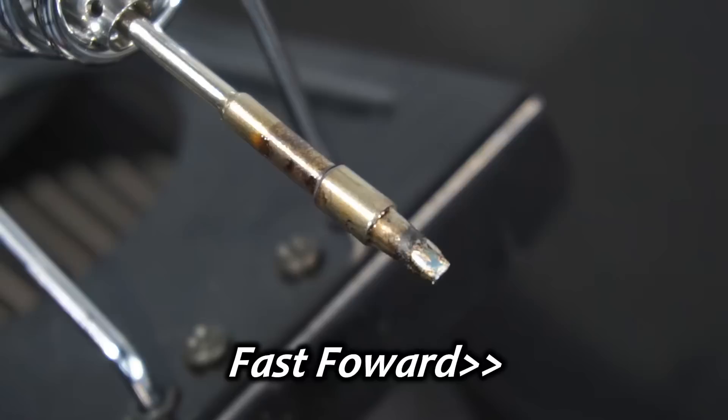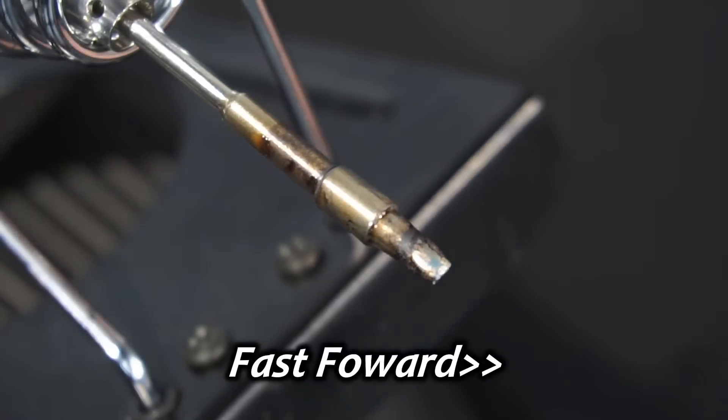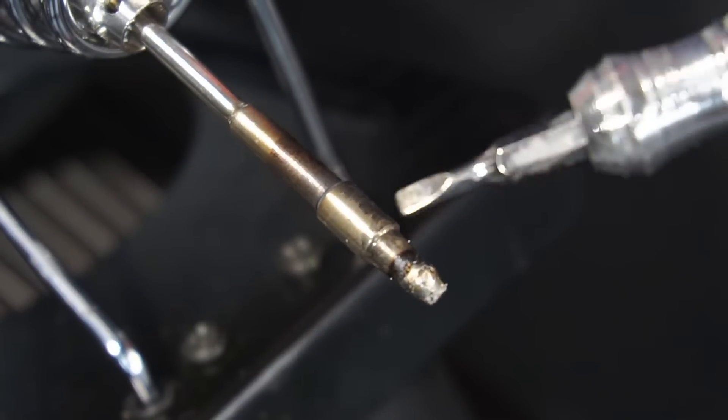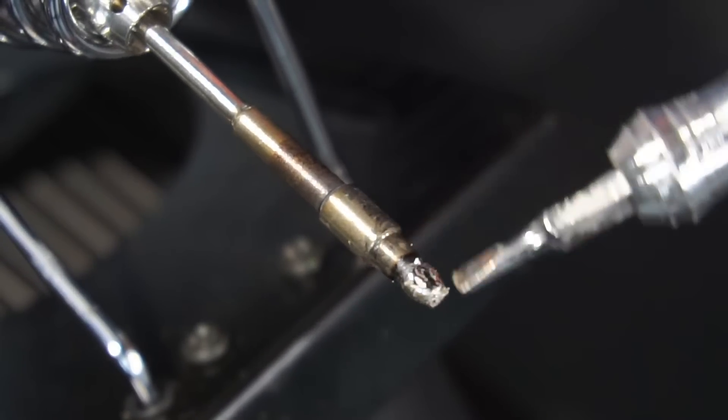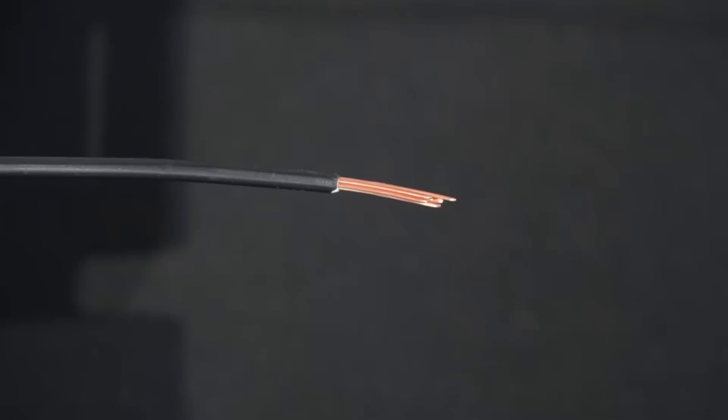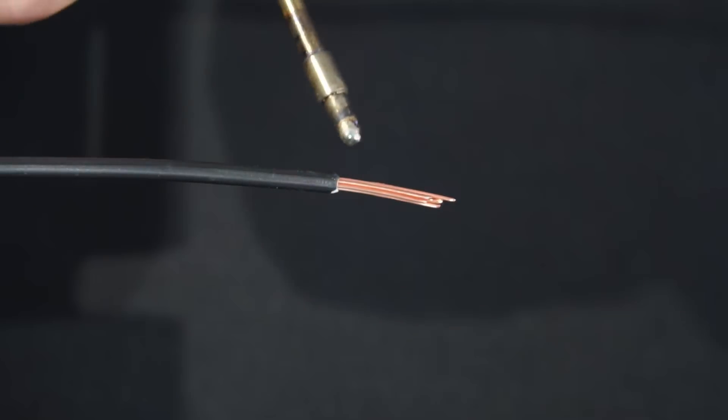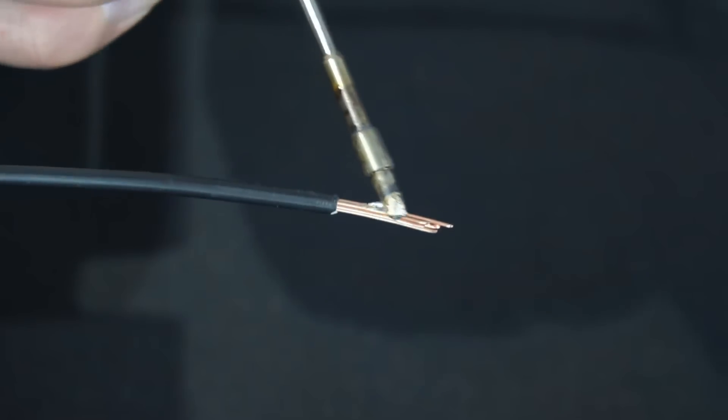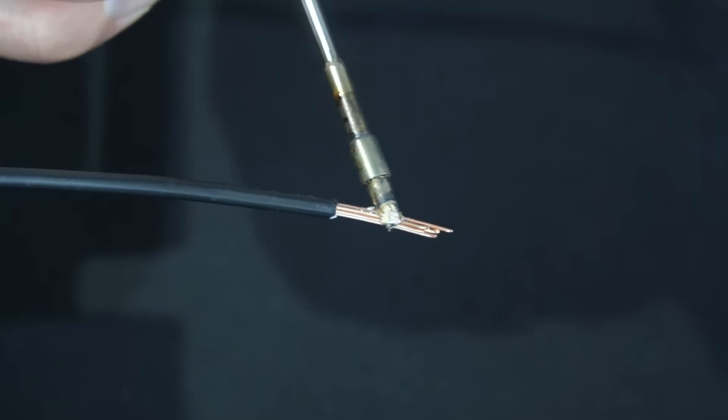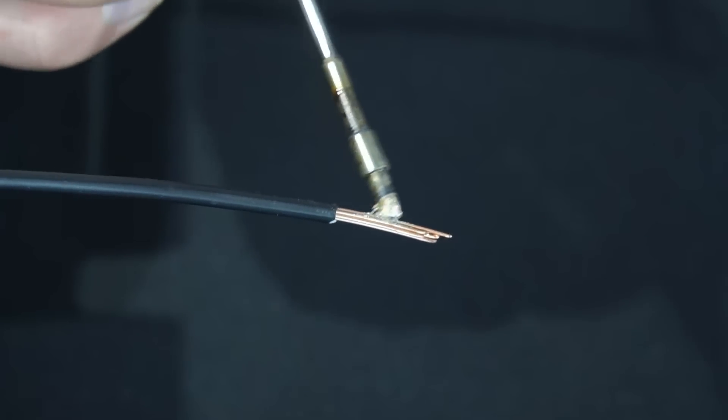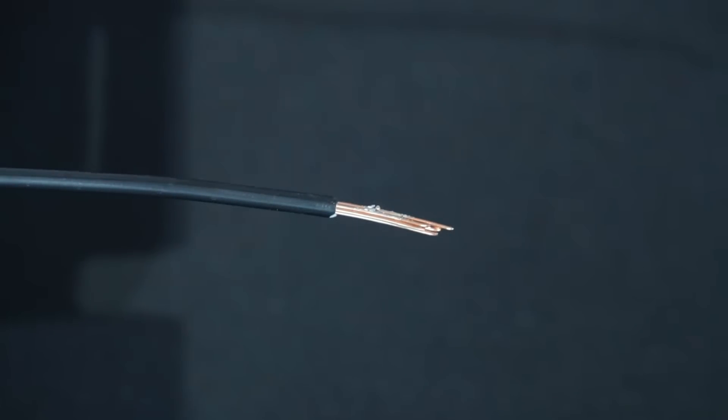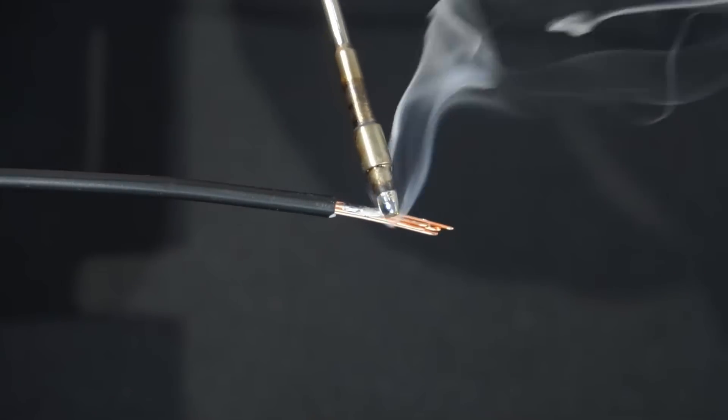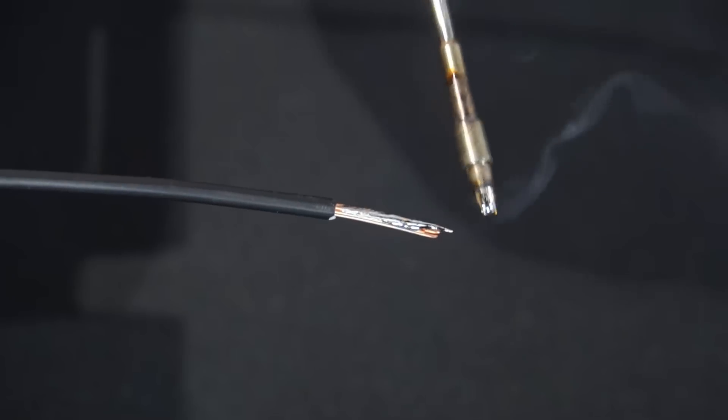Over time solder will change its appearance, starting out shiny and eventually turning dull. If I scrape off the oxide layer, you can see underneath it is still clean and shiny. Trying to tin this copper wire with solder that has built up an oxide layer is quite frankly a nightmare. You can see the solder isn't tinning the copper as it should, and basically all I'm doing is smearing the solder across the wire. So I'll clean my iron and apply some fresh solder, and try this again. As you can see this time, the solder immediately tins the copper.